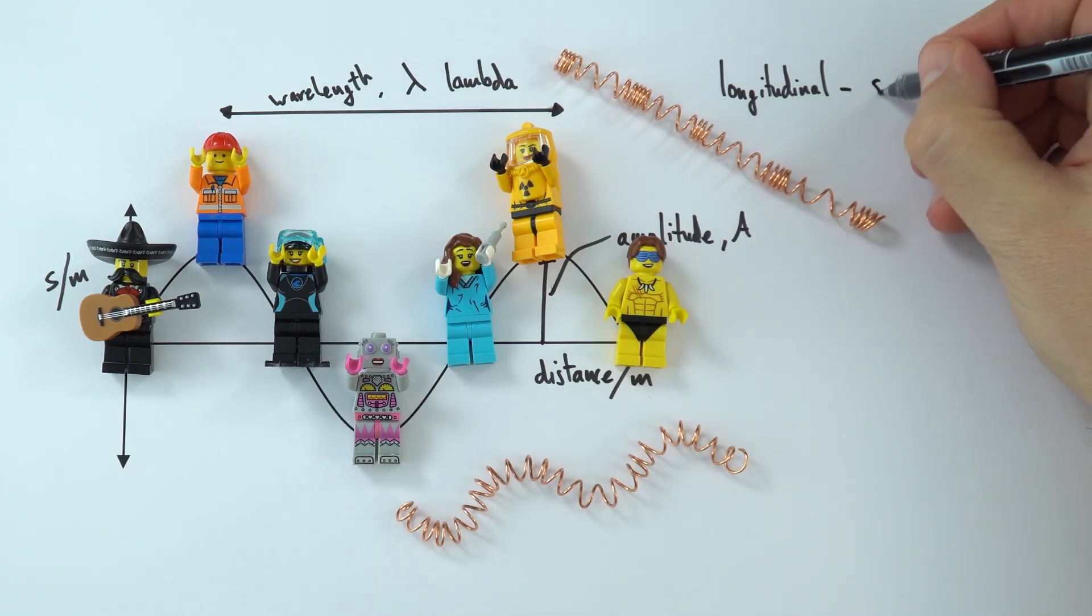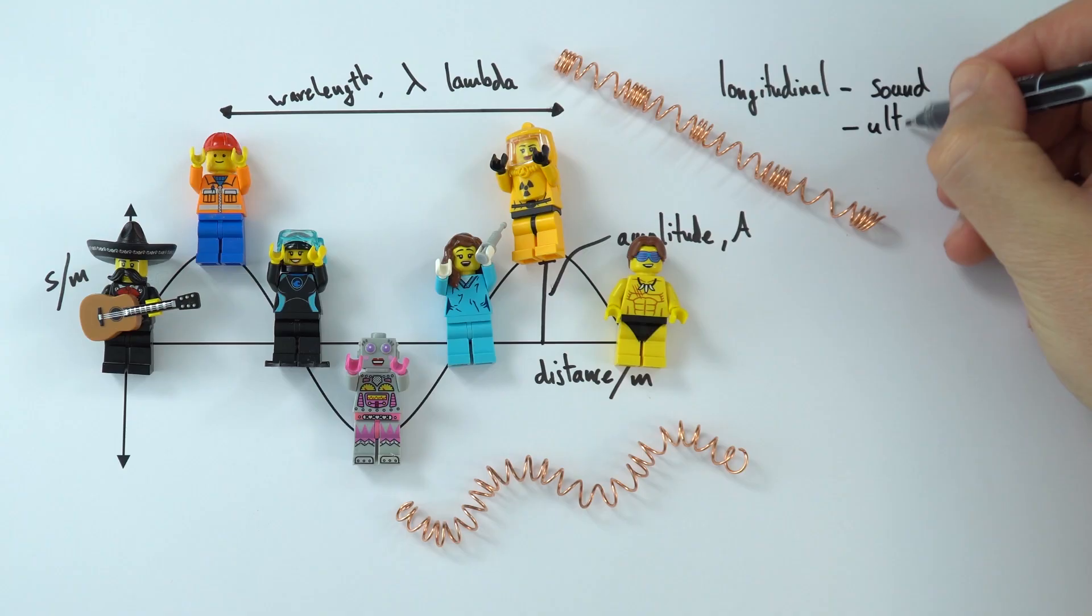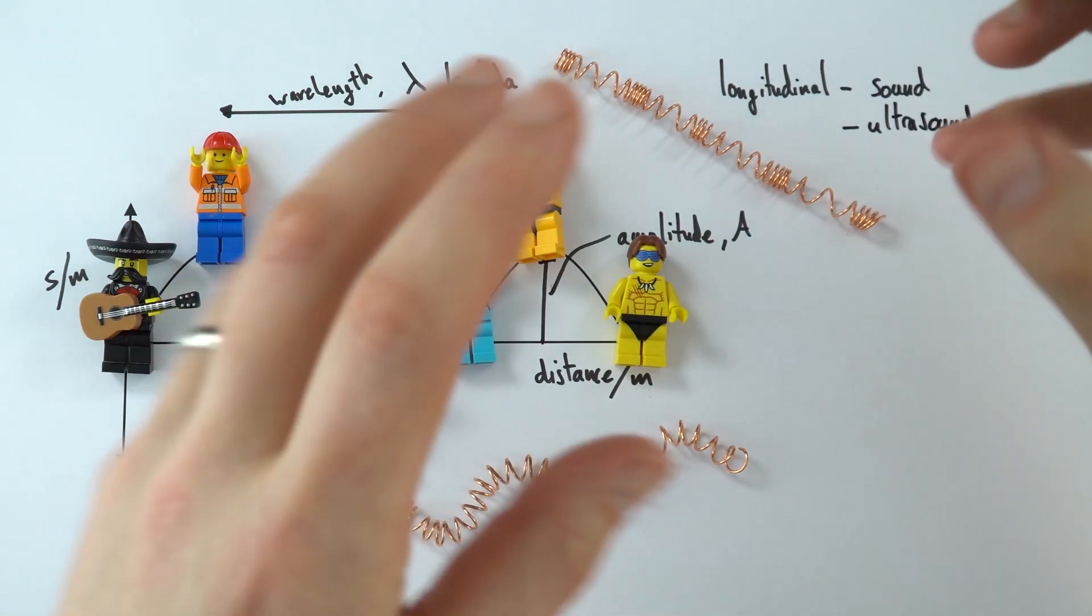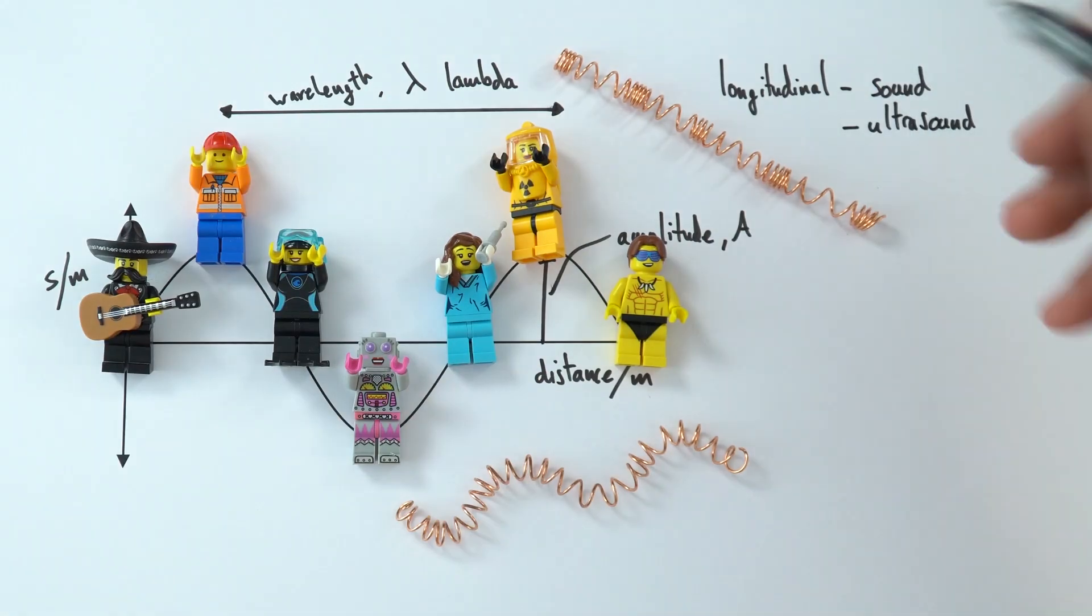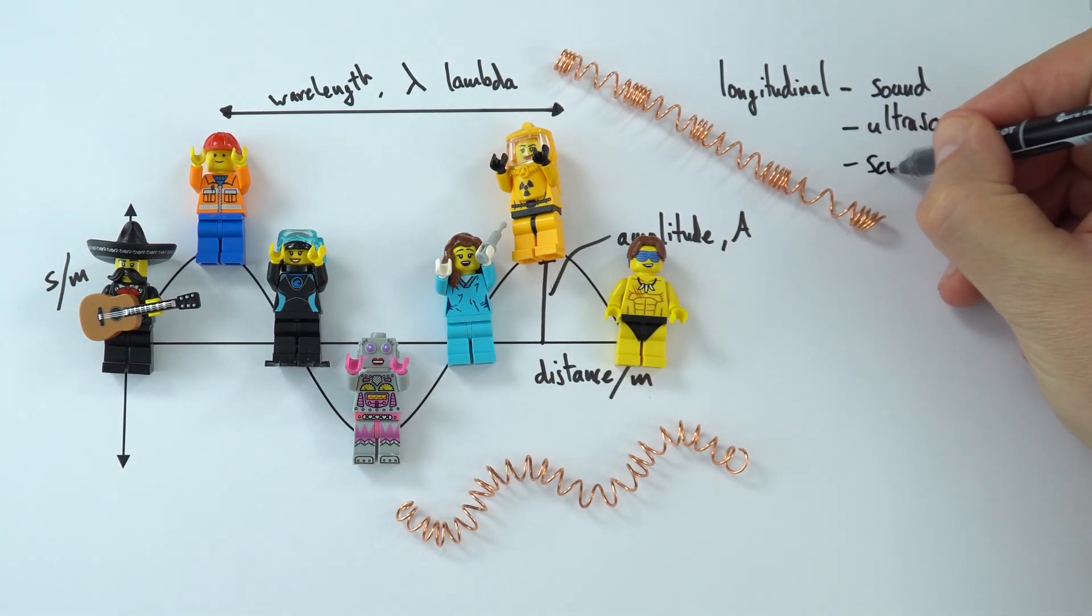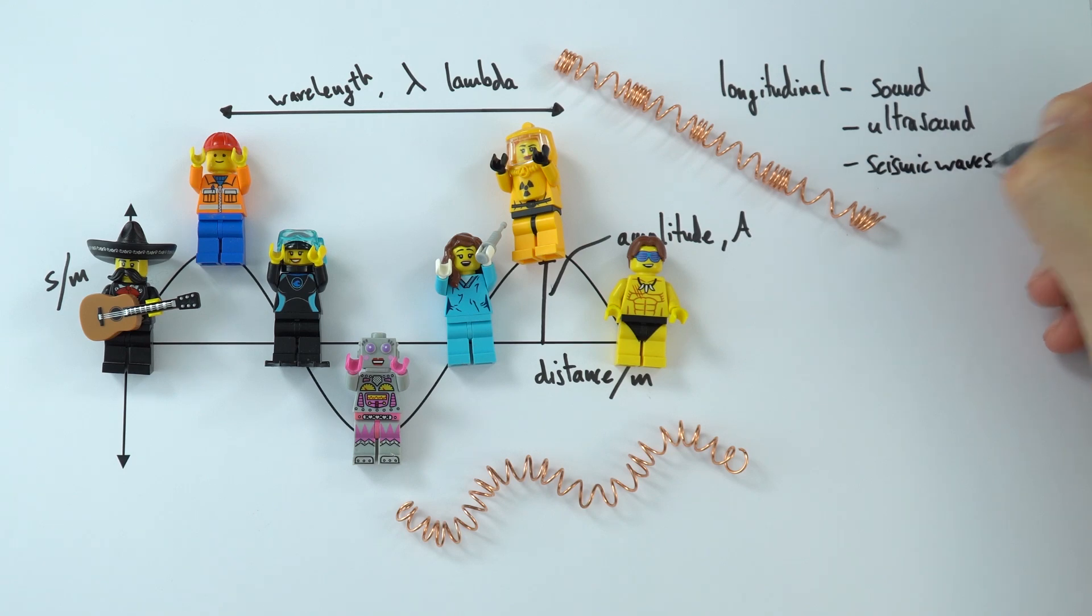Examples of longitudinal waves include all of sound waves. It also includes ultrasound, which is just sound but at a really high frequency, above 20,000 hertz. And this is just these particles vibrating backwards and forwards. We also have seismic waves, and the type that we're thinking about here are the primary waves.